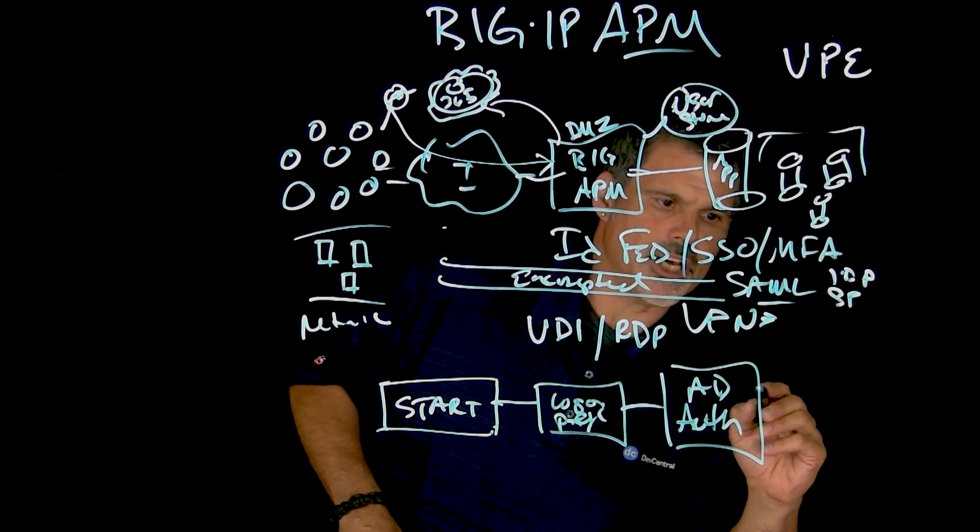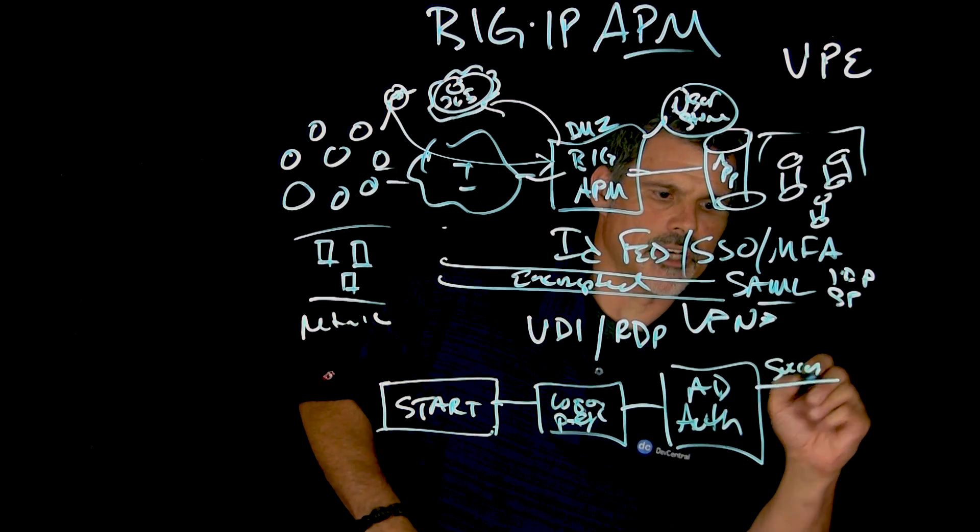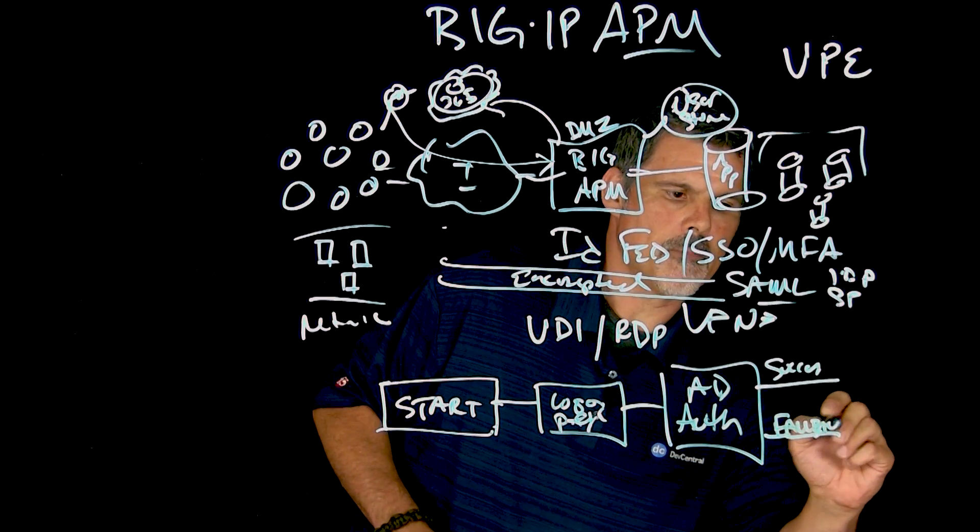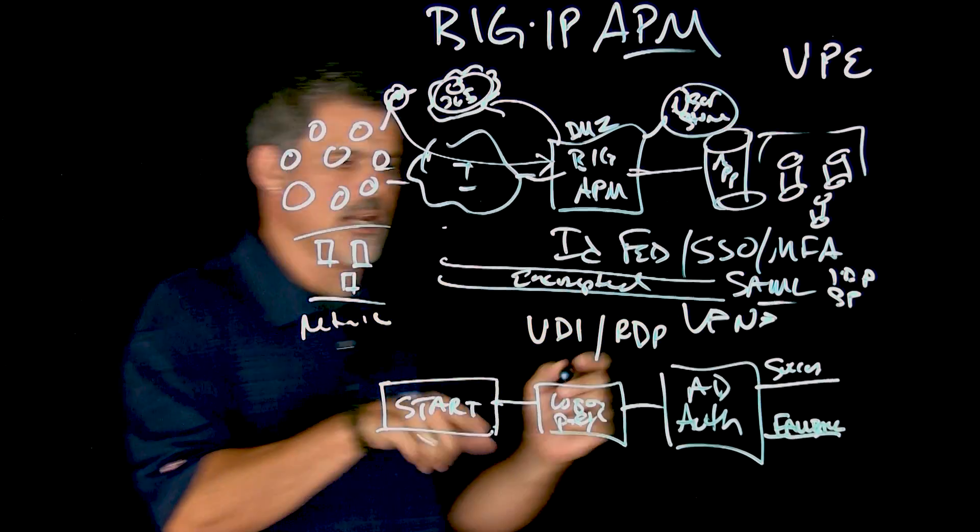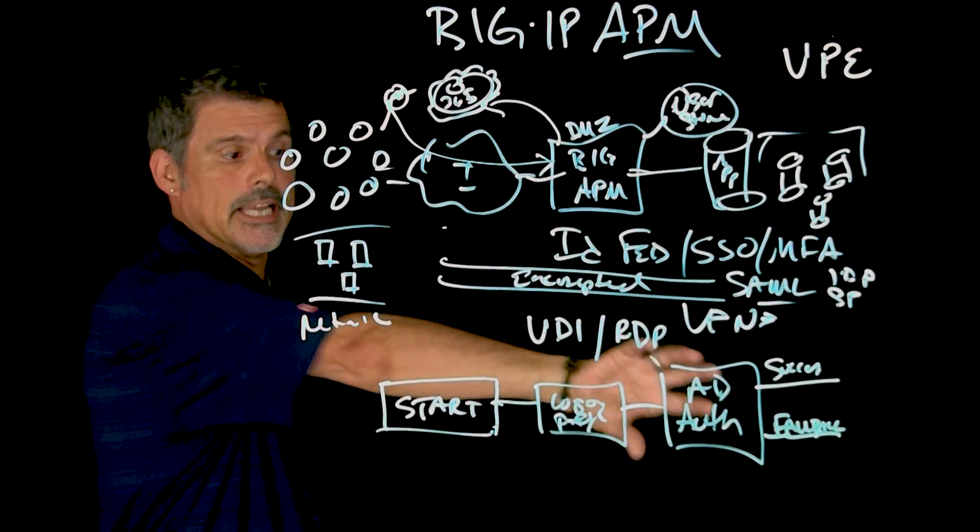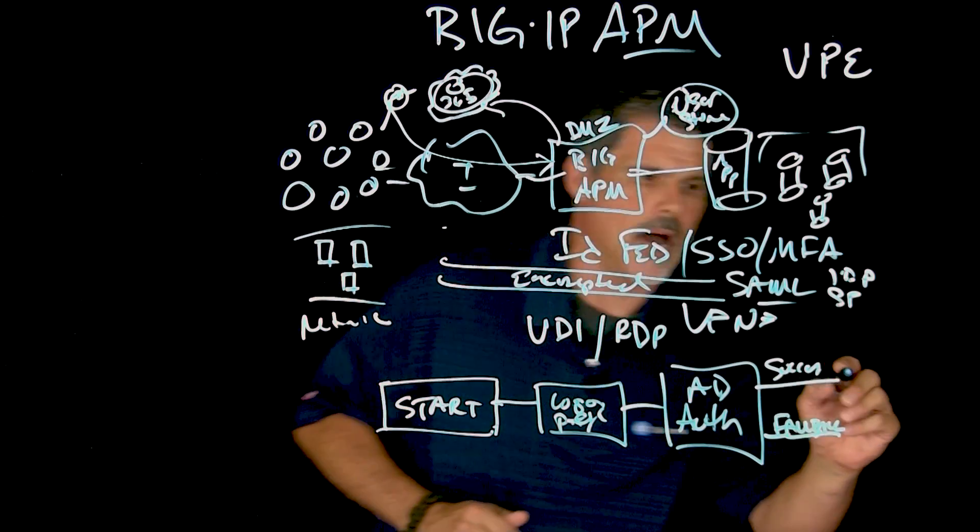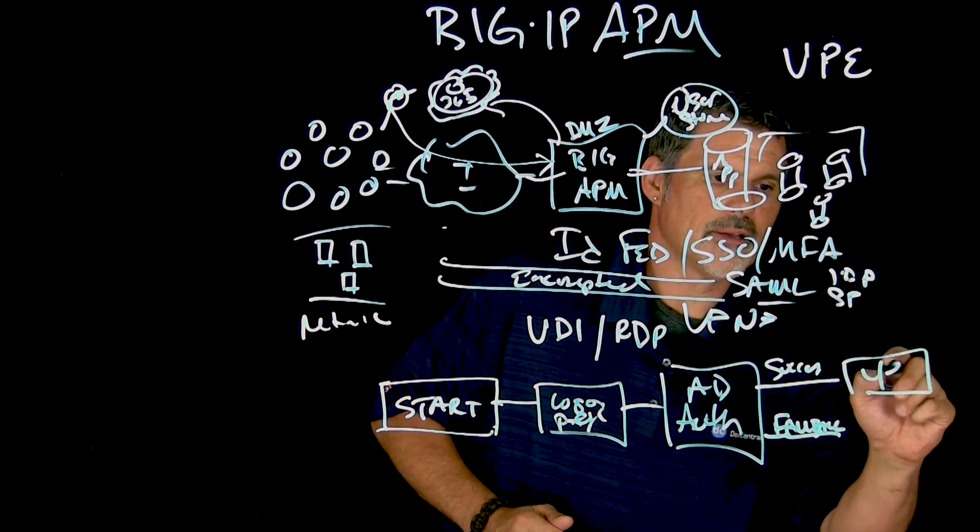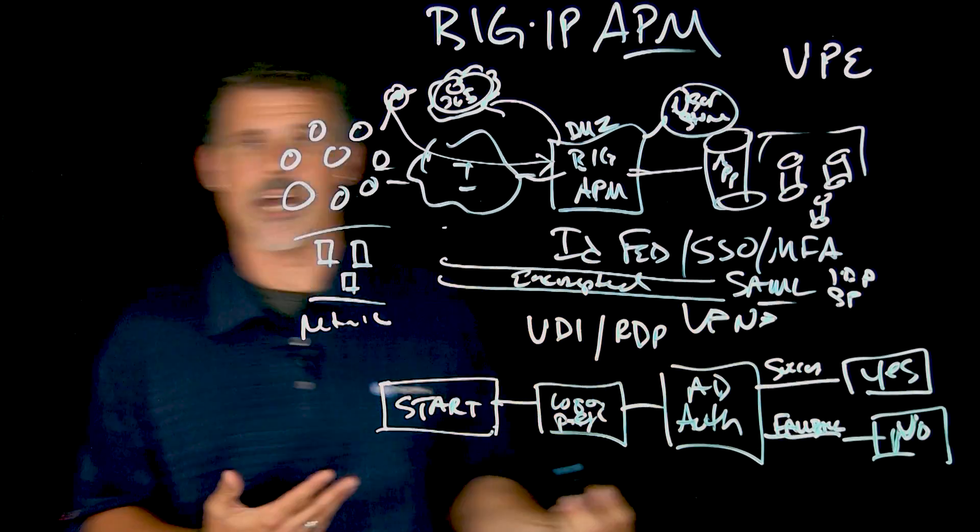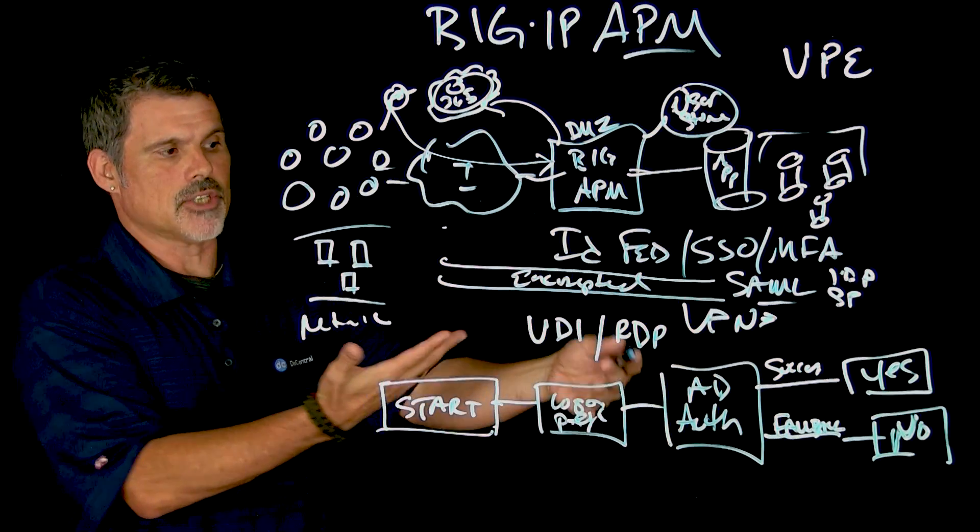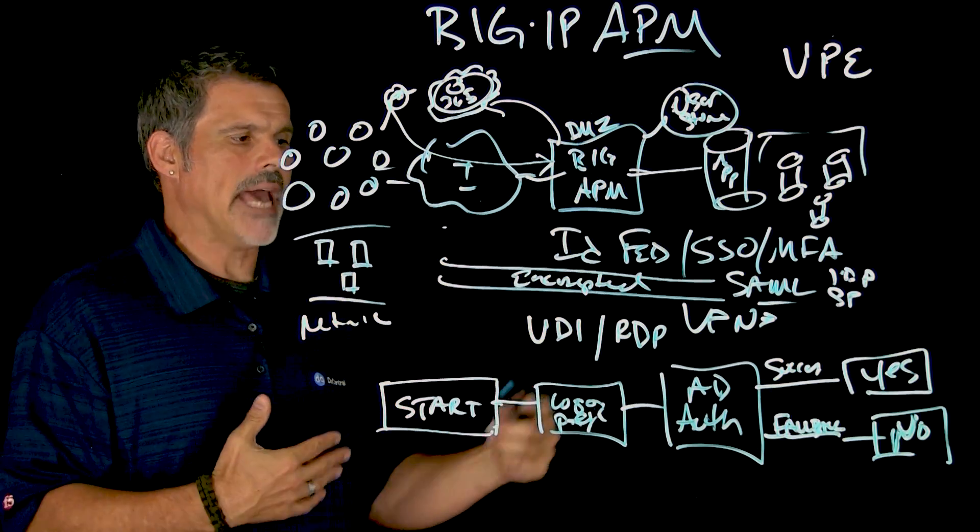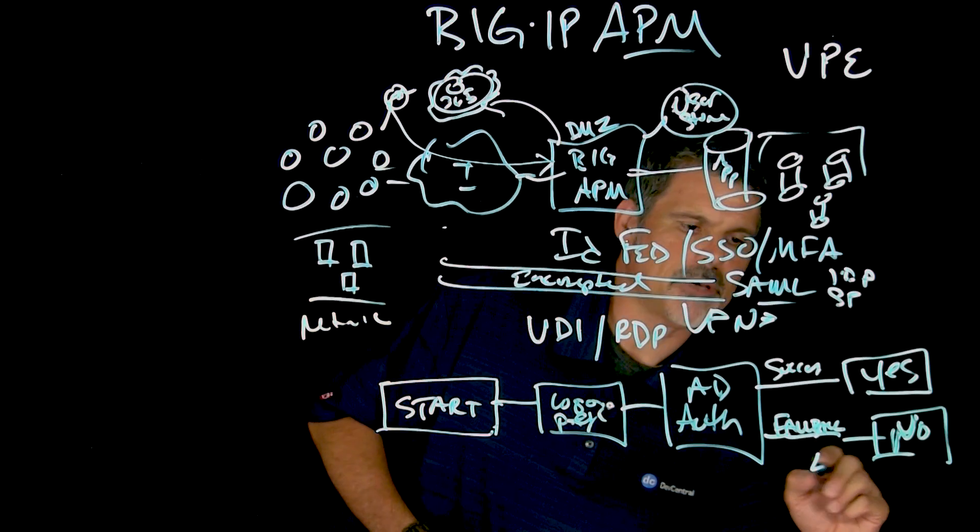So then once you get to the AD auth, you either have success or a fail or fallback. And then based on the inspection and then the results of the inspection of each of these criteria that you set up, you either gain access or you don't gain access. And it might not necessarily be full access. Maybe there's some criteria that hasn't been met and you get limited. So fallback might be limited.